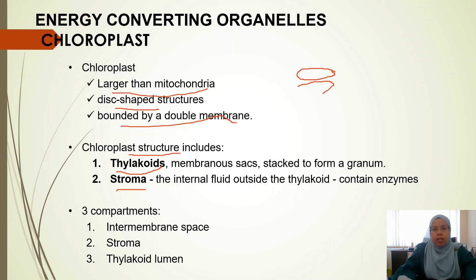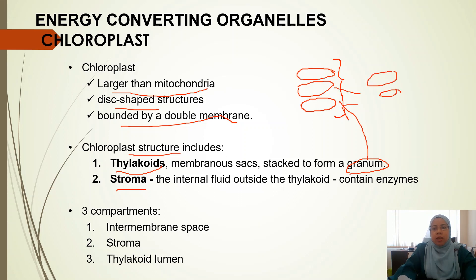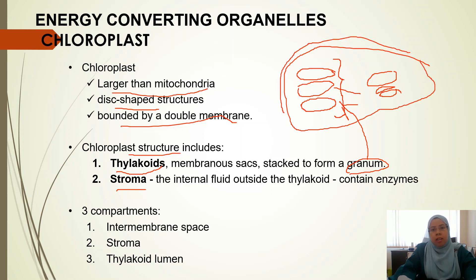The chloroplast structure includes thylakoids and stroma. Thylakoids look like coins — they are stacked, and a stack of thylakoids is called a granum. Grana are interconnected with one another inside the chloroplast. Inside the chloroplast's double membrane, there is an internal fluid called the stroma. The stroma, which is outside the thylakoids, contains enzymes.